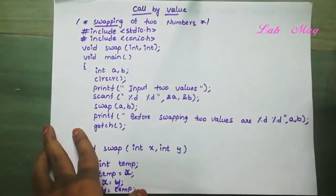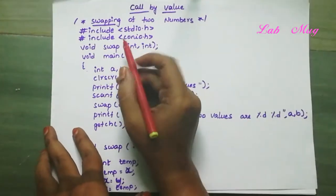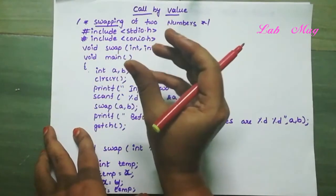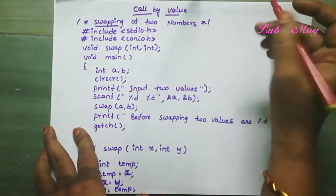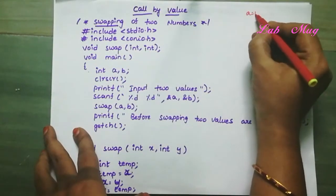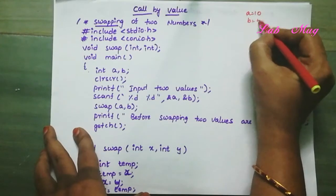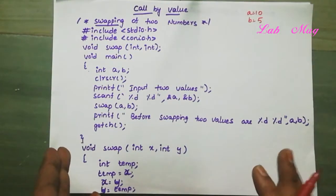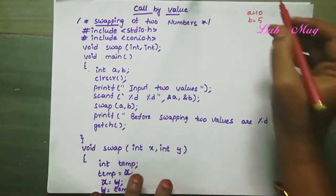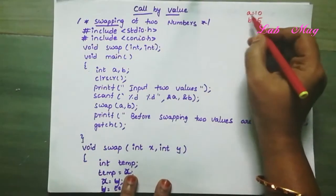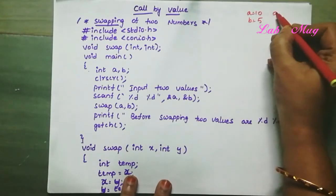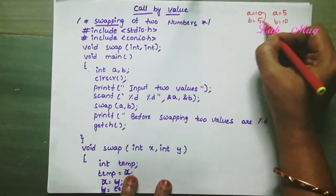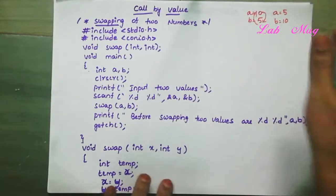The example program is swapping of two numbers. Swapping means interchanging two values. For example, if a is equal to 10 and b is equal to 5, after swapping, a becomes 5 and b becomes 10. So the two values are exchanged.